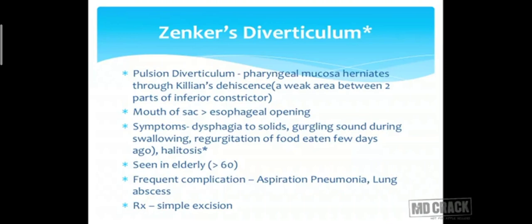Zenker's diverticulum typically presents at age 60 or more. Because the diverticulum is close to the trachea and bronchi, there can be aspiration pneumonia, and if long-standing, a lung abscess. The treatment is straightforward once diagnosed — simple excision of the diverticulum resolves the patient's symptoms.